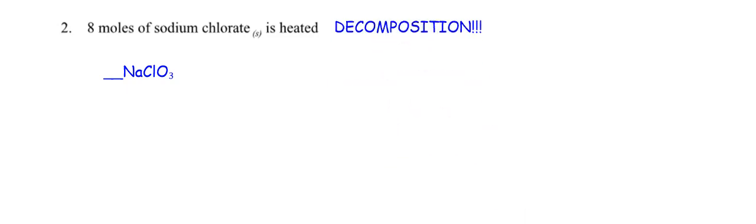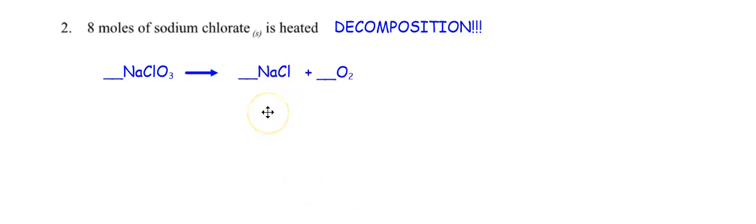It's decomposition. So I have one reactant — what am I going to make? If you go back and look at your notes, what do all chlorates decompose into? Take away all the oxygens you can, and what's left over is the metal chloride — sodium chloride. Plus one, minus one, no crisscross — that's NaCl. And don't forget the other product: O₂. Now you have to balance this.